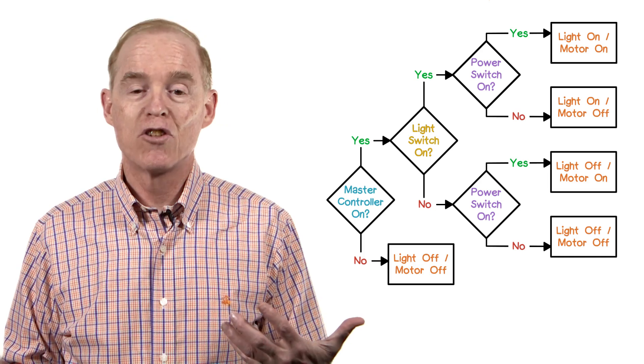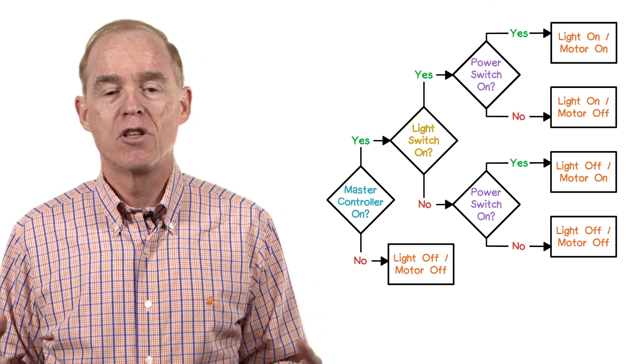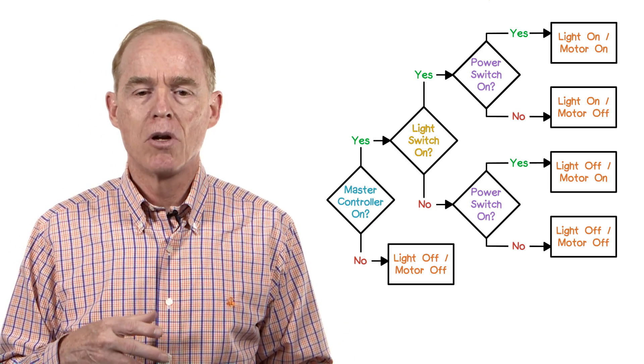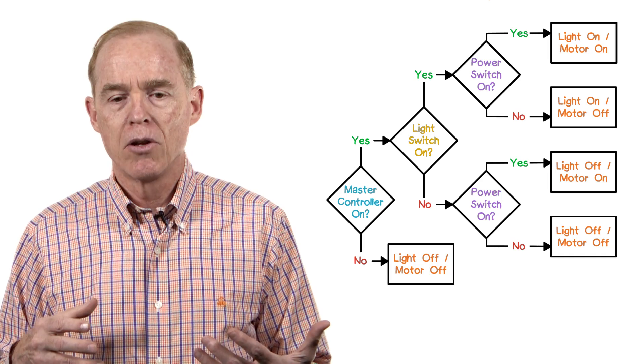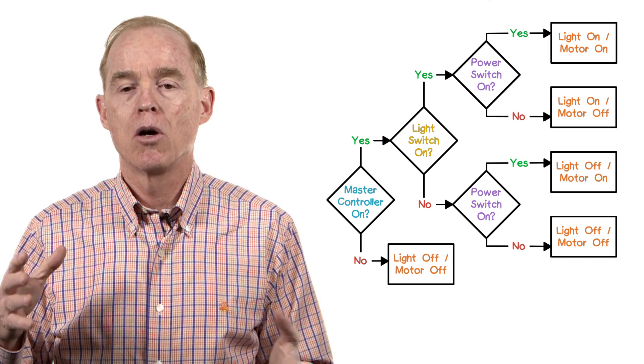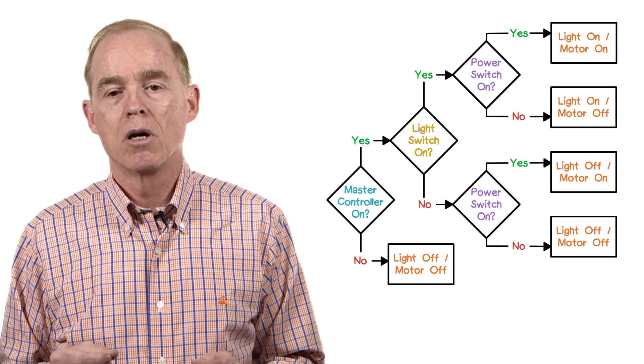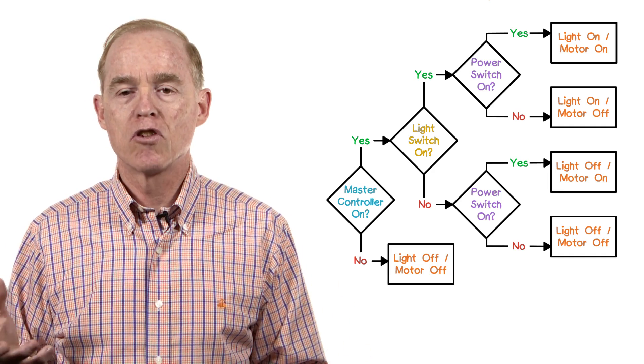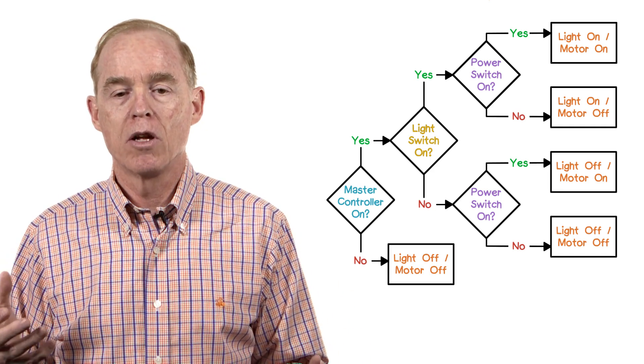Here's the tree for the previous situation. On the left is the decision about the master control, and on the rightmost is the resultant response from the system in terms of what lights are on and what lights are off.